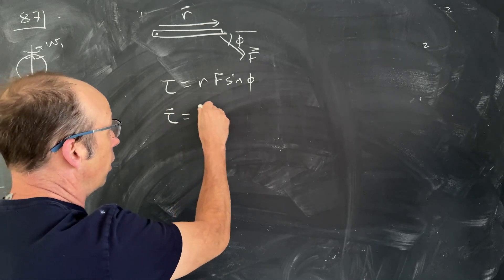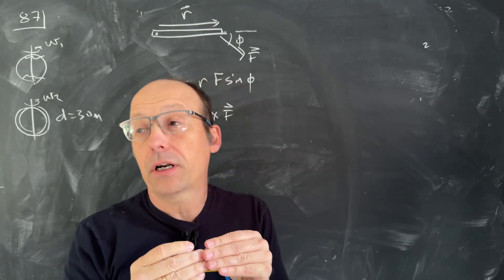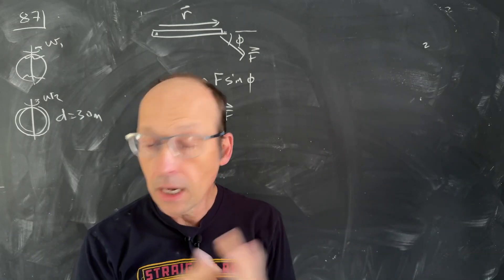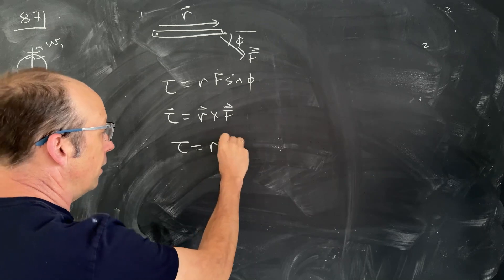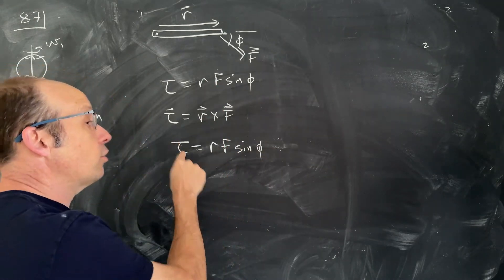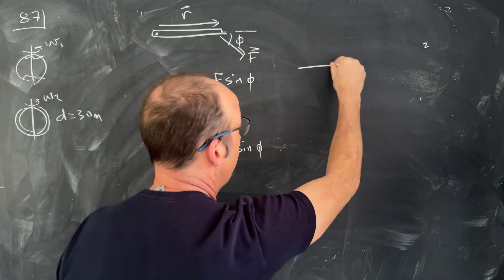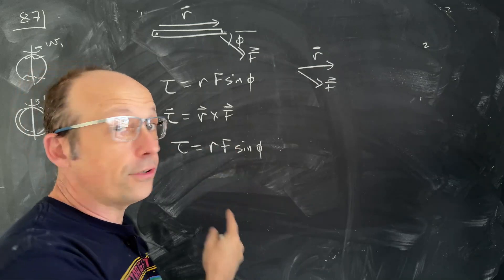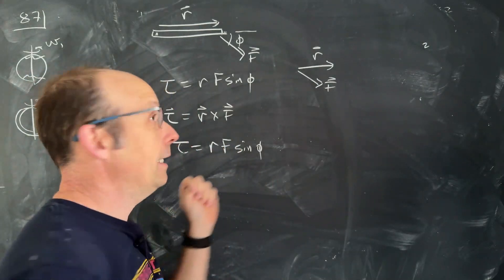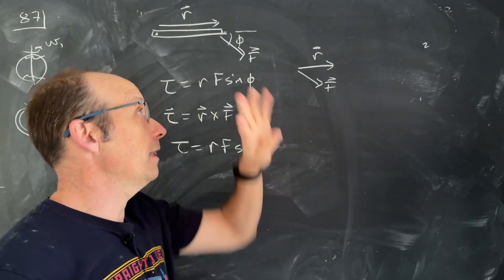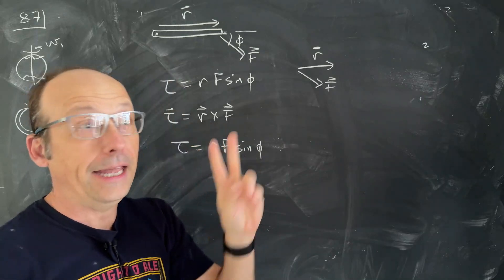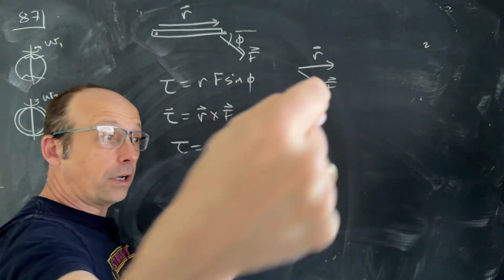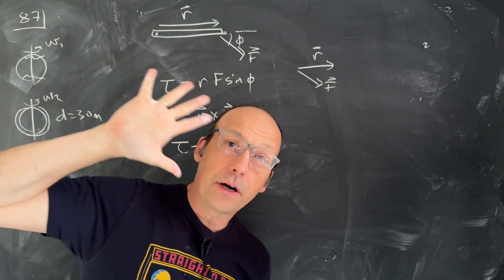Torque is the vector r cross F — a cross product operates on two vectors to give a vector result, sometimes called the vector product. The magnitude is r·F·sin(phi). The direction is perpendicular to both r and F. There are only two such vectors in 3D space: one coming out of the page and one going into the page.